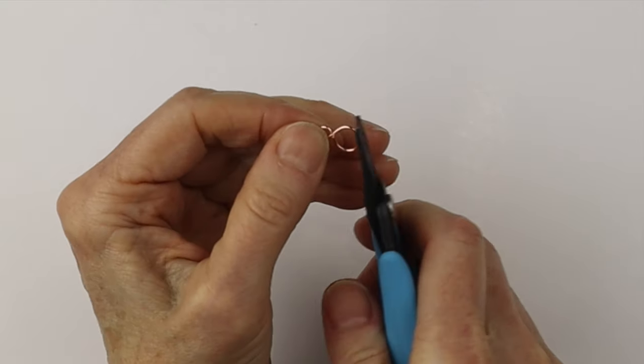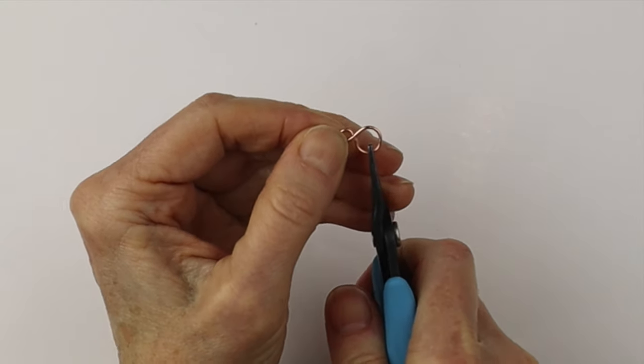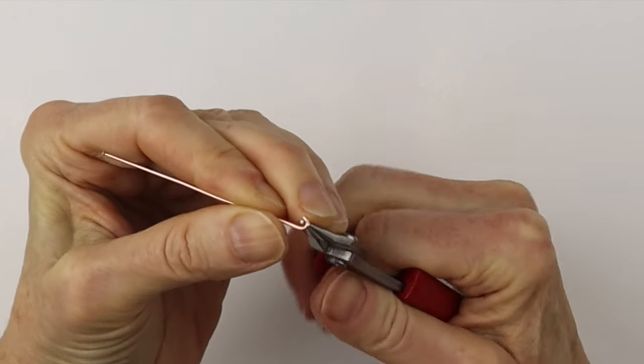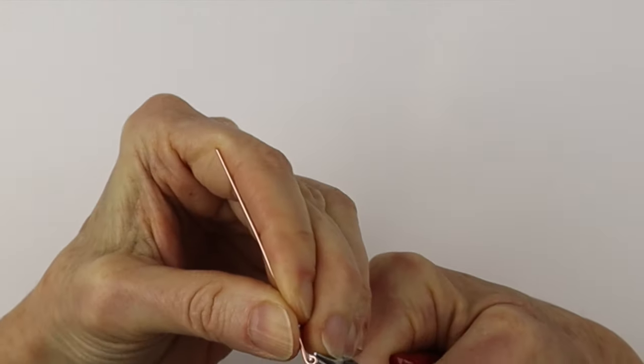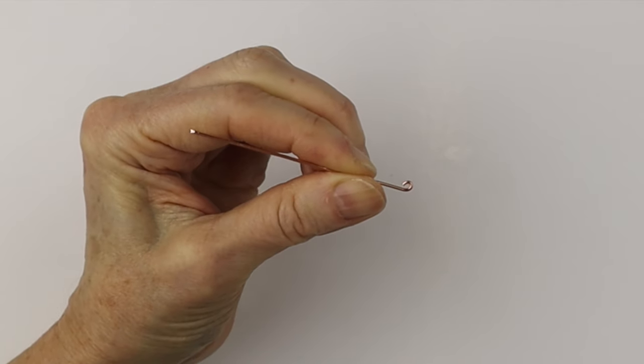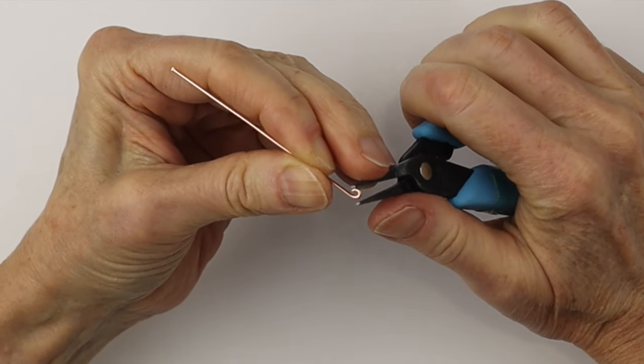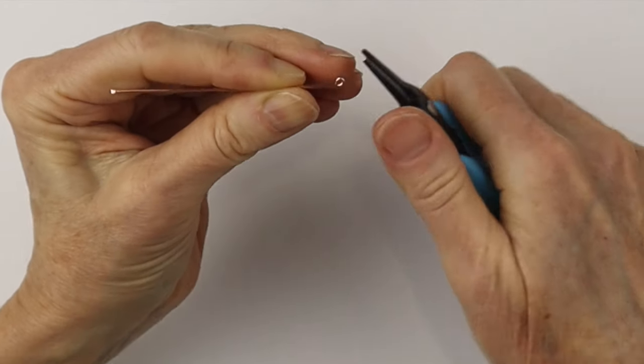Next we're going to do the hook. Cut a slightly longer piece of wire. I cut about three inches, always better too long than too short. We're going to do a tiny loop on one end.